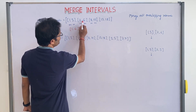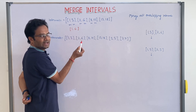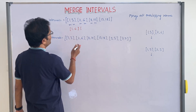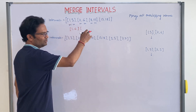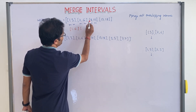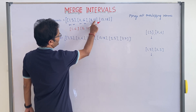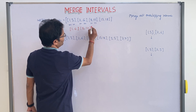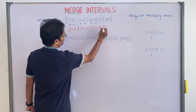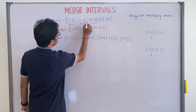Now, does this meeting overlap with the next one? No, because that one is ending at 6 o'clock and the another meeting starts at 8 o'clock. So there is no overlapping — this is a 24-hour scenario. There is no overlapping between these, so the output would be 8 to 10. And here, this meeting ends at 10 o'clock and the next starts at 15, so this is also not overlapping. This is your final output.